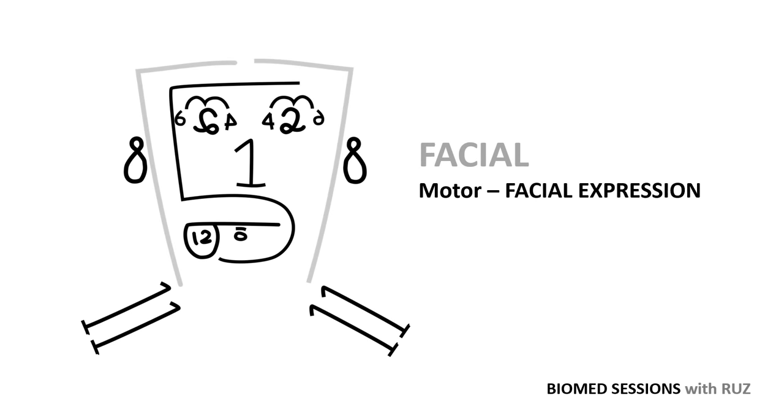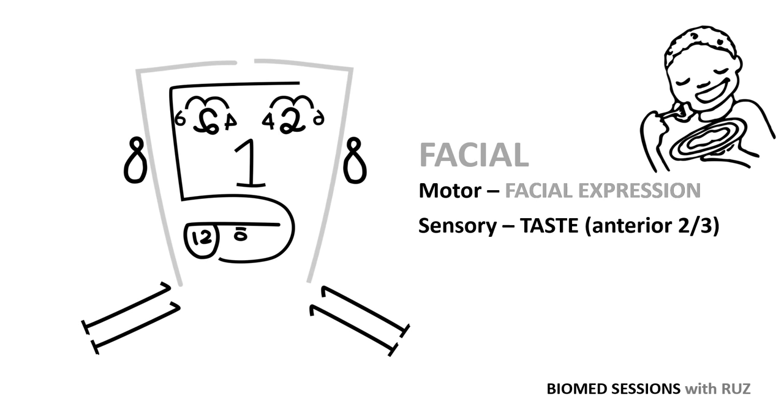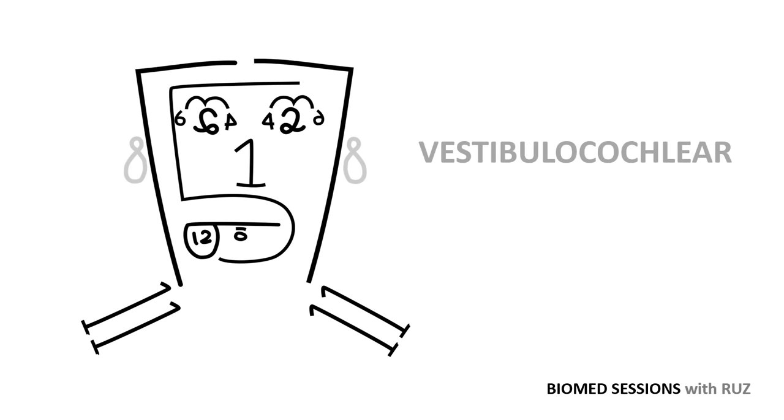Cranial nerve 7 is the facial nerve. It has motor fibers for facial expression, and sensory fibers which are involved in taste from the anterior two-thirds of the tongue. Not to be confused with the trigeminal nerve, which aids in general sensation to this same region. A good way of remembering the facial nerve's function is to imagine your facial expression as you taste your favorite piece of food. Additionally, the facial nerve is involved in saliva and tear secretion.